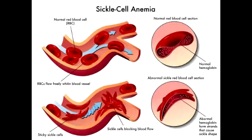What are the kidney complications that can arise due to sickle cell anemia? In the kidney, there can be renal papillary necrosis due to low oxygen in the kidney papilla. There can also be microhematuria due to medullary infarcts. Both of these conditions occur due to the vaso-occlusion seen with sickle cell anemia.